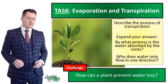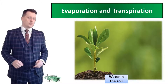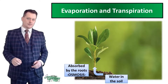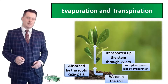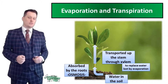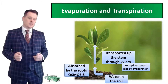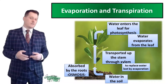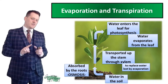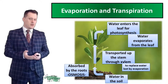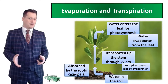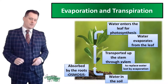Water starts in the soil and is absorbed by the roots by the process of osmosis, where water moves from a high water potential to a low water potential. It is then transported up the stem through the xylem. It only moves in one direction because it is replacing water lost by evaporation and water used in photosynthesis. Water enters the leaves for photosynthesis, and then some evaporates and exits through the stomata. If plants need to conserve water, they can close the stomata to stop water vapor from escaping, or wilt to lower the surface area available for catching sunlight, decreasing photosynthesis and water usage.